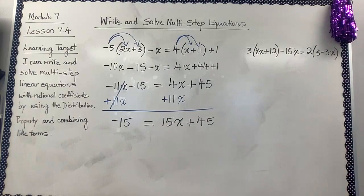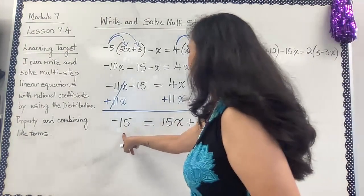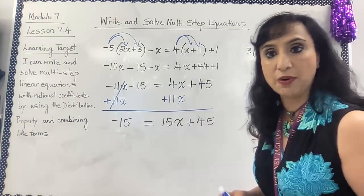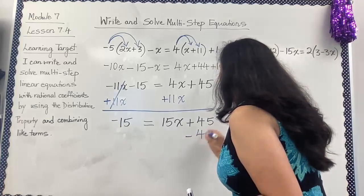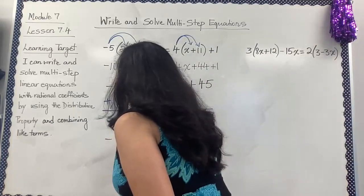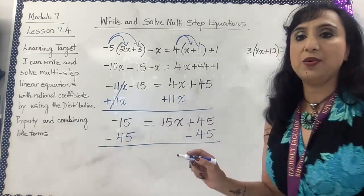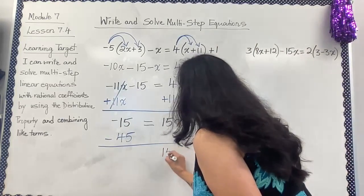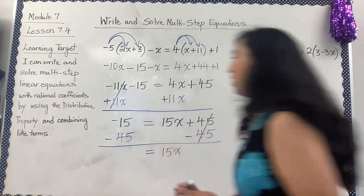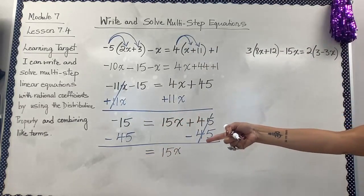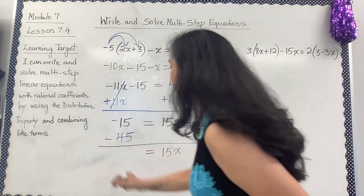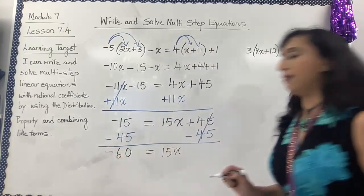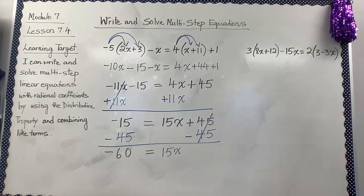After simplifying, I can see that my numbers are here. I'm going to use the subtraction property of equality — the inverse of plus 45 is minus 45. Whatever I do on one side, I do the same on the other. 45 minus 45 is zero. Now both signs are the same, so I'm adding: I get negative 60. So 15x equals negative 60.